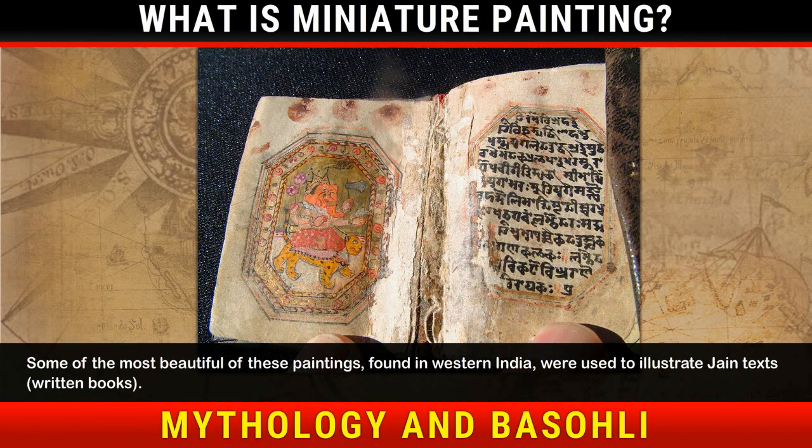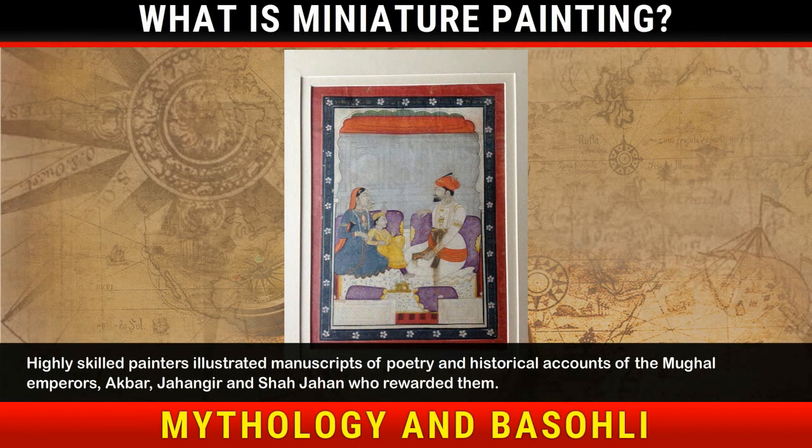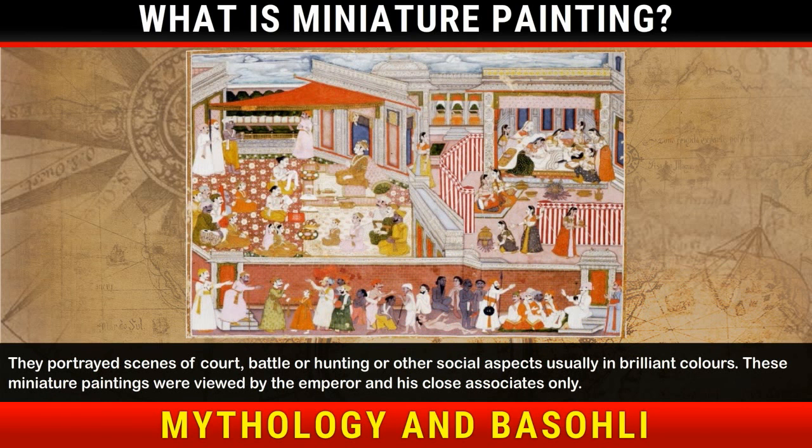Highly skilled painters illustrated manuscripts of poetry and historical accounts of the Mughal emperors Akbar, Jahangir and Shah Jahan, who rewarded them. They portrayed scenes of court, battle, hunting or other social aspects, usually in brilliant colours. These miniature paintings were viewed by the emperor and his close associates only.